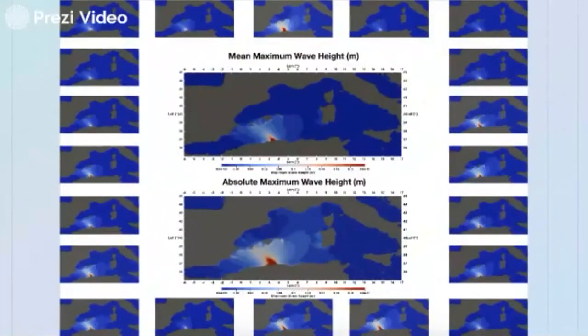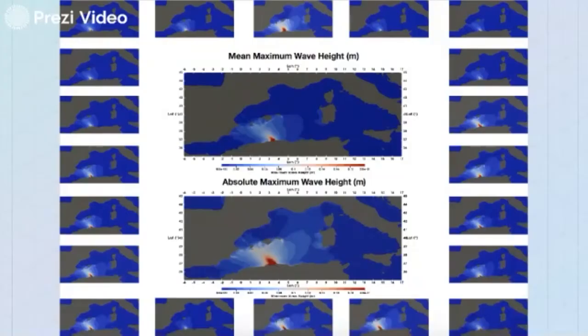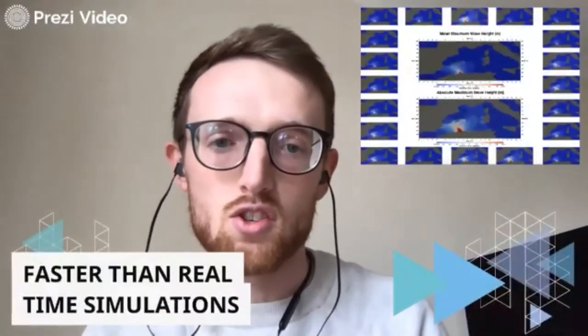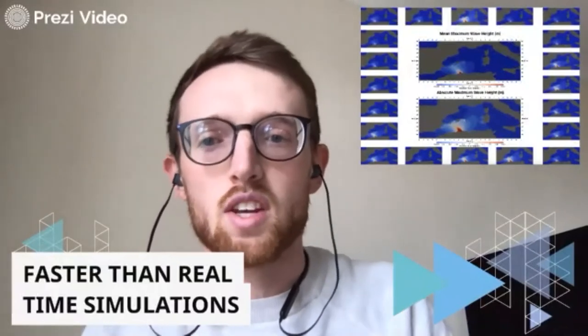To give you an idea: 20 separate realizations of a tsunami source, which are needed to capture the uncertainty, are simulated for four hours for the Mediterranean. The resultant maximum wave heights are then outputted and plotted. Using our numerical code, these simulations are completed in 97 seconds. The output figures are then combined to give absolute and mean maximum wave heights, allowing tsunami warning centers to rapidly deduce the level of threat and identify the sections of coastline most at risk.